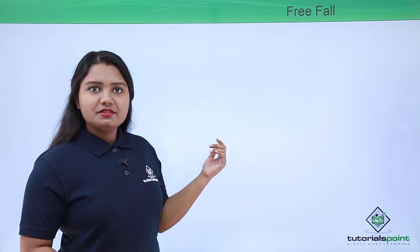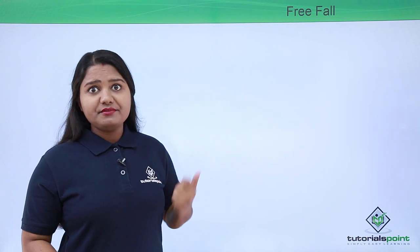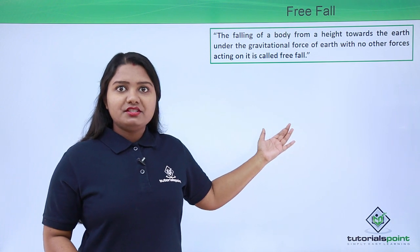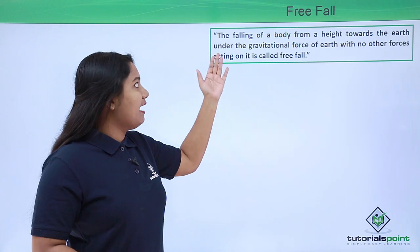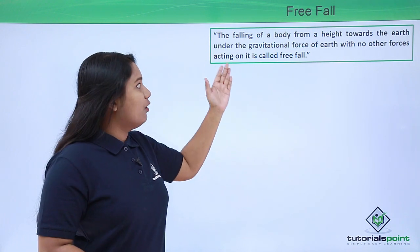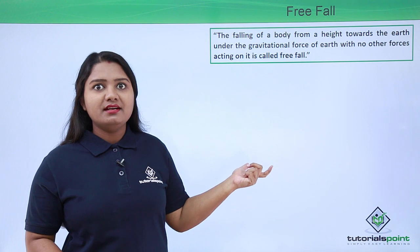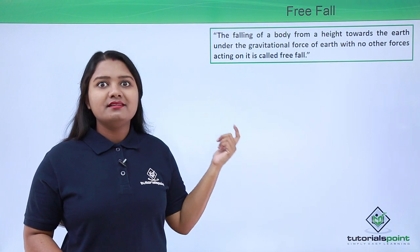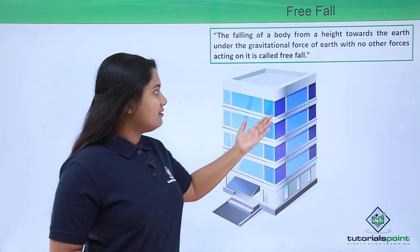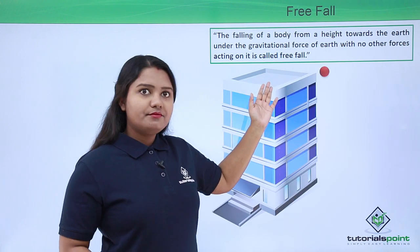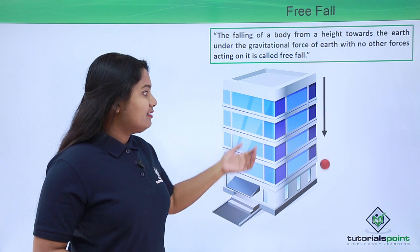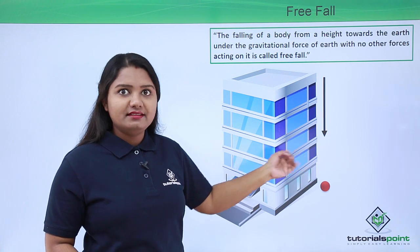In the previous video where we discussed free fall, we said that a freely falling body is one which is moving only under the action of the gravitational force of Earth, with no other forces acting on it. We looked at a ball which was dropped from the top of a building, and it fell down and hit the ground.